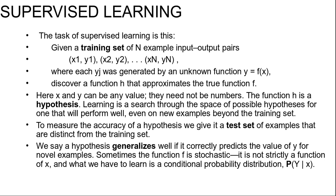Here x and y can be any value. They need not be numbers and the function h is a hypothesis. Learning is a search through the space of possible hypotheses for one that will perform well, even on new examples beyond the training set. To measure the accuracy of a hypothesis, we give it a test set of examples that are distinct from the training set.